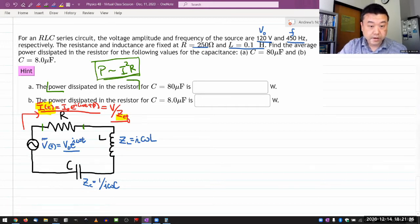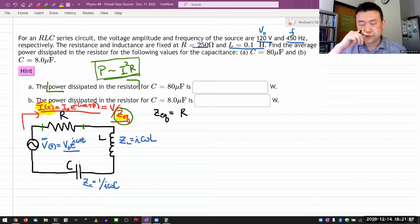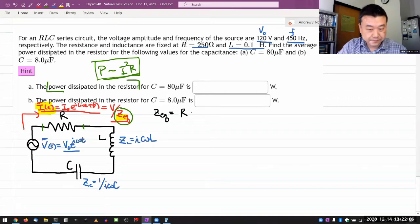I need to calculate the equivalent impedance. My equivalent impedance is impedance of the resistor, that's just R. These are elements in series, so I'm just going to add them like resistors in series. Impedance of resistor plus the impedance of the inductor plus the impedance of capacitor.